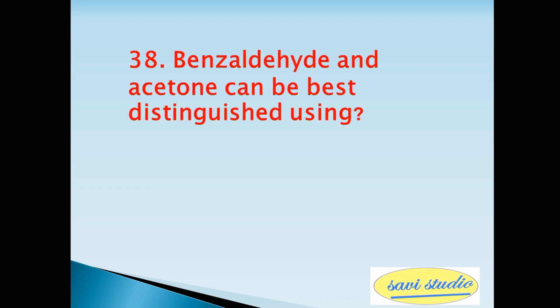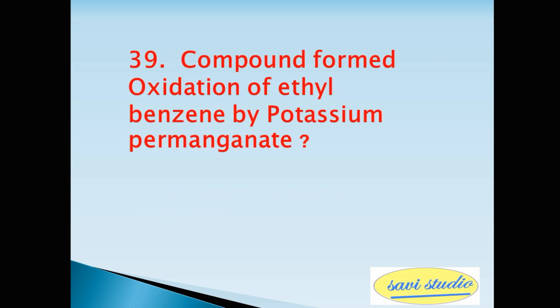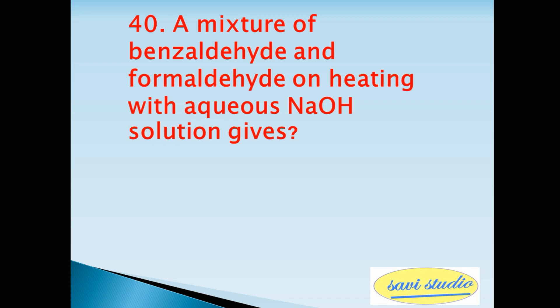Thirty-eighth question, benzaldehyde and acetone can be best distinguished using? Answer Tollens reagent. Thirty-ninth question, compound formed by oxidation of ethylbenzene by potassium permanganate? Answer benzoic acid. Fortieth question, a mixture of benzaldehyde and formaldehyde on heating with aqueous NaOH solution gives? Answer Benzyl alcohol and sodium formate.